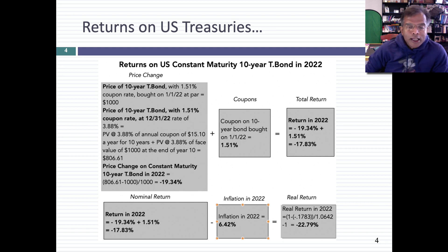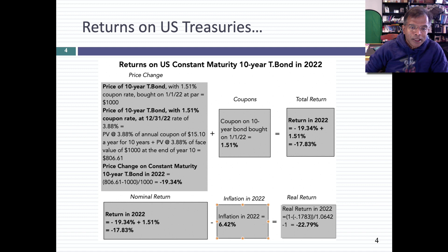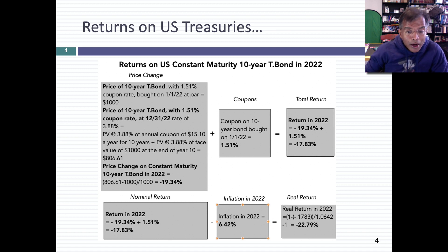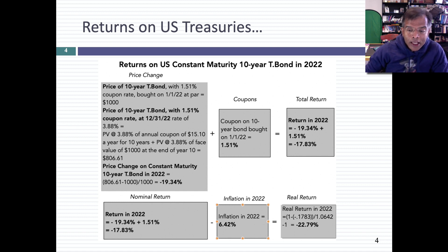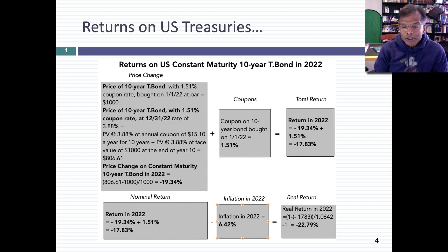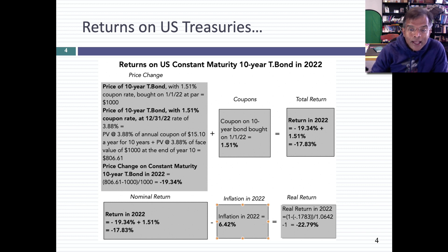So on the price change front, you'd have lost 19.3%. You would have collected your coupon of 1.51%, which would have given you a return for the year of minus 17.83%. Think about it — you bought T-bonds thinking they were safe, and you actually lost 17.8% of your money. In fact, that return is very close to what equities lost, minus 18% during the course of the year. T-bonds had almost as bad a year as stocks did.